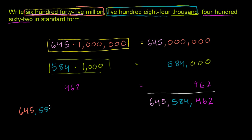If they didn't tell us 462, we would put three zeros here, and that would fulfill the six zeros we need behind 645 million. But they tell us 462, so we write that right here. 462.